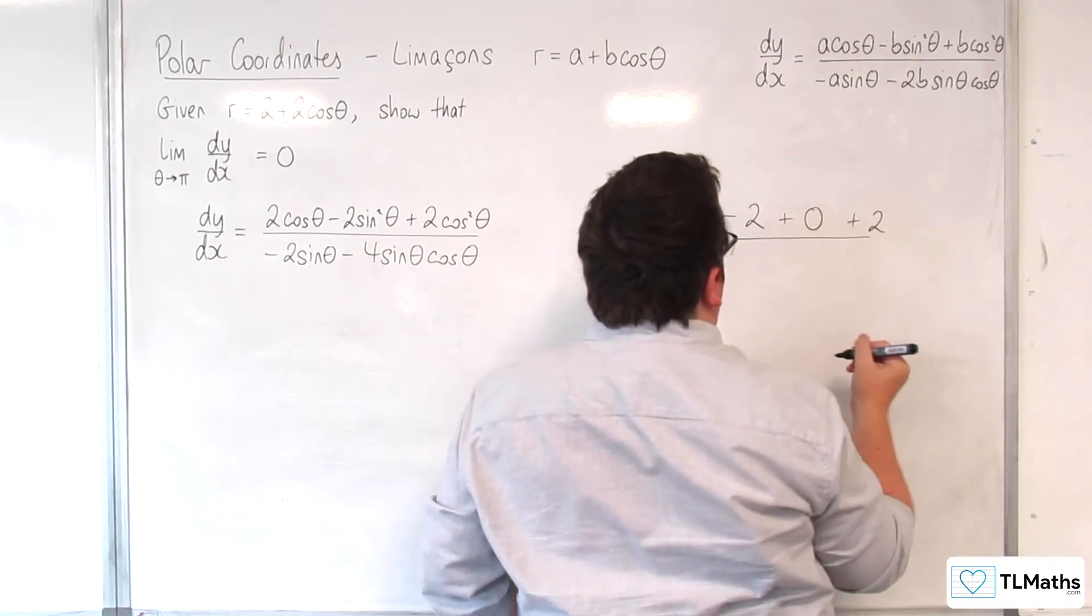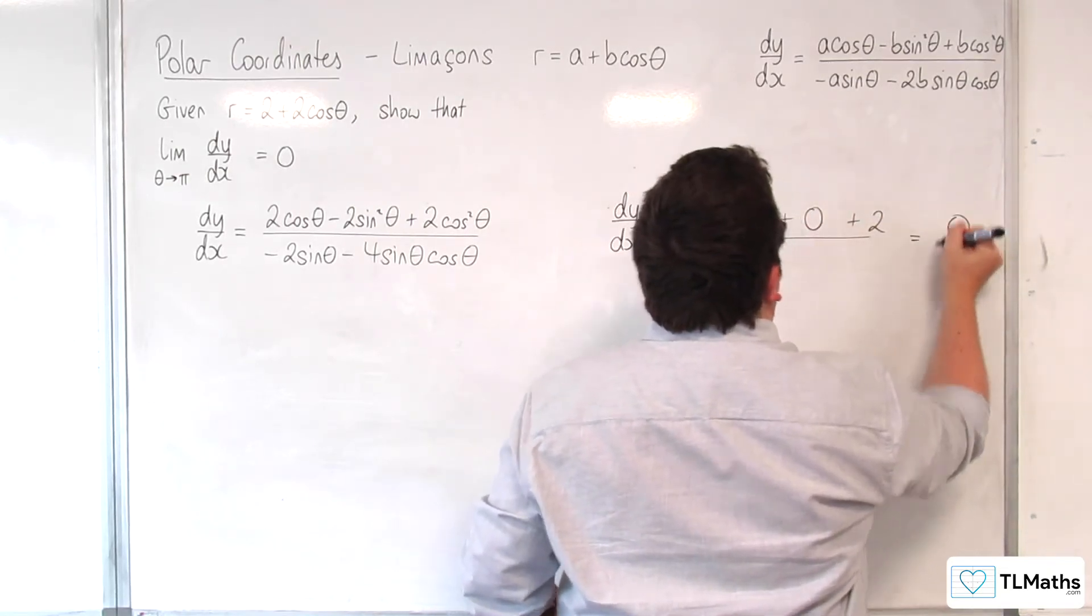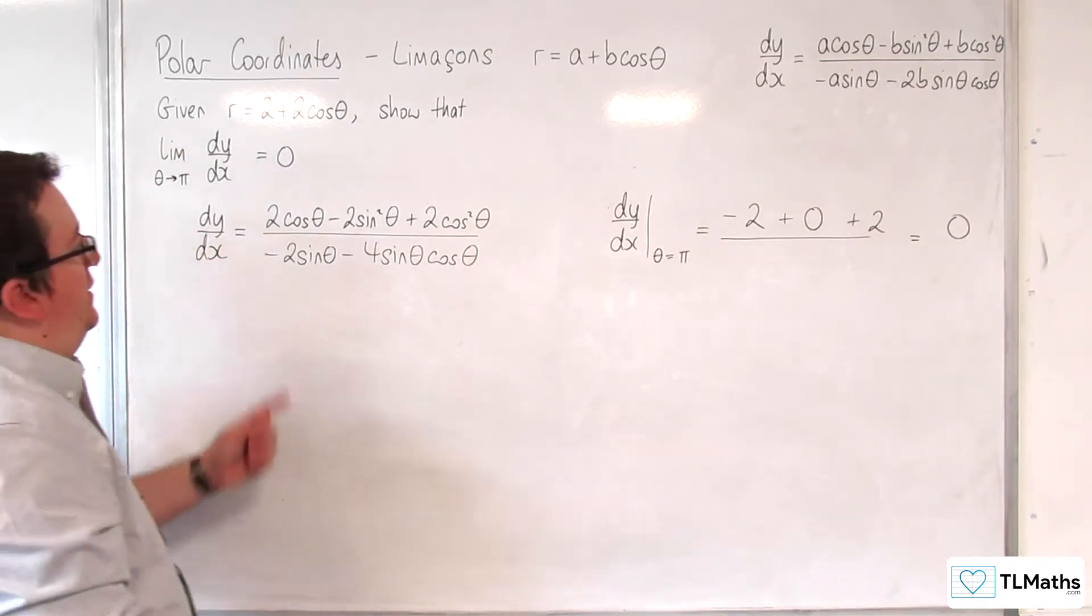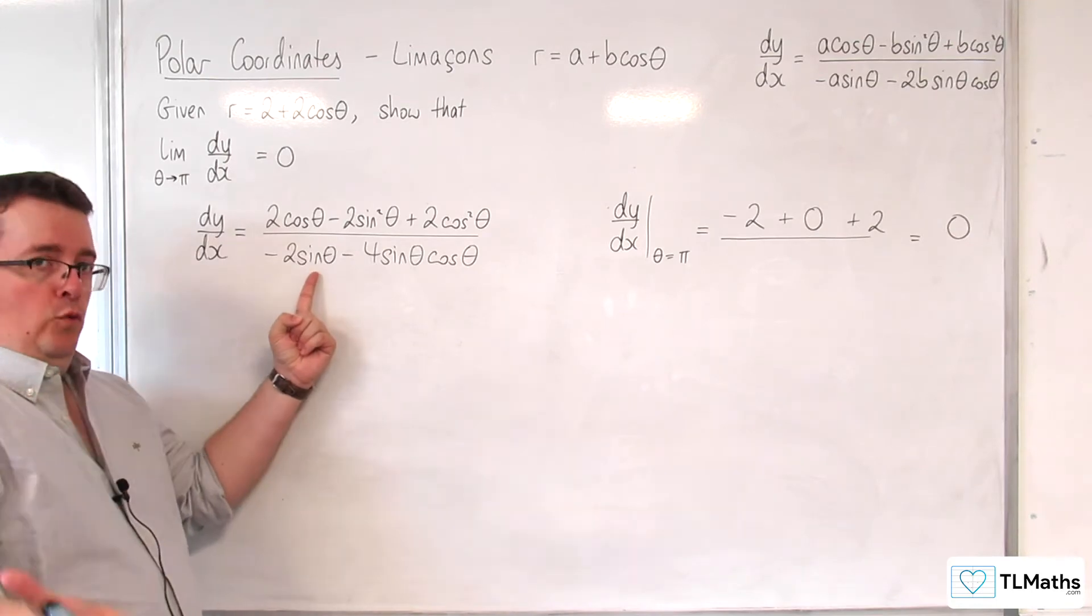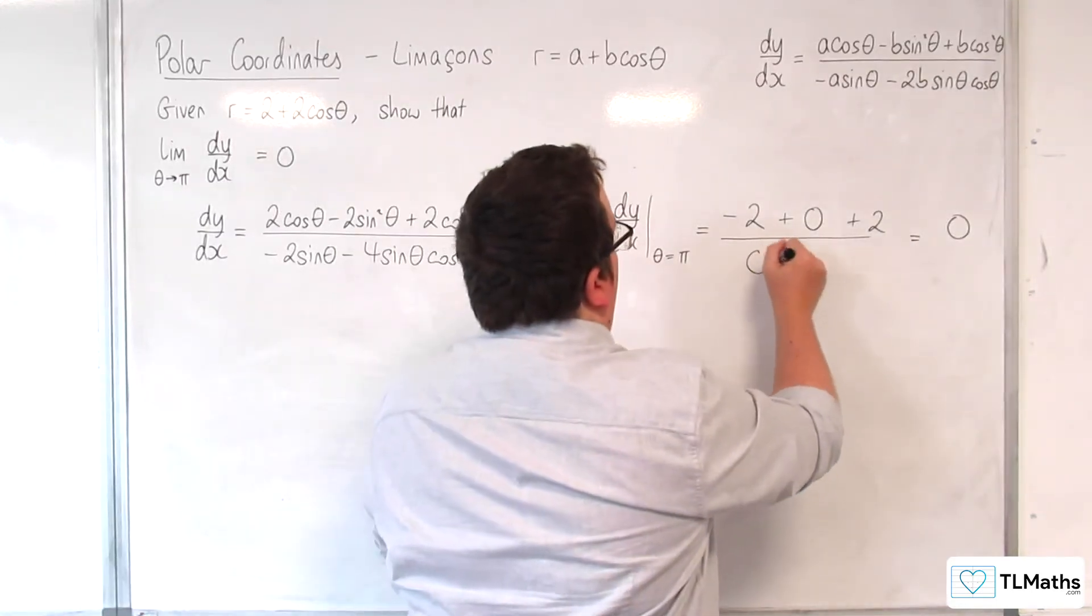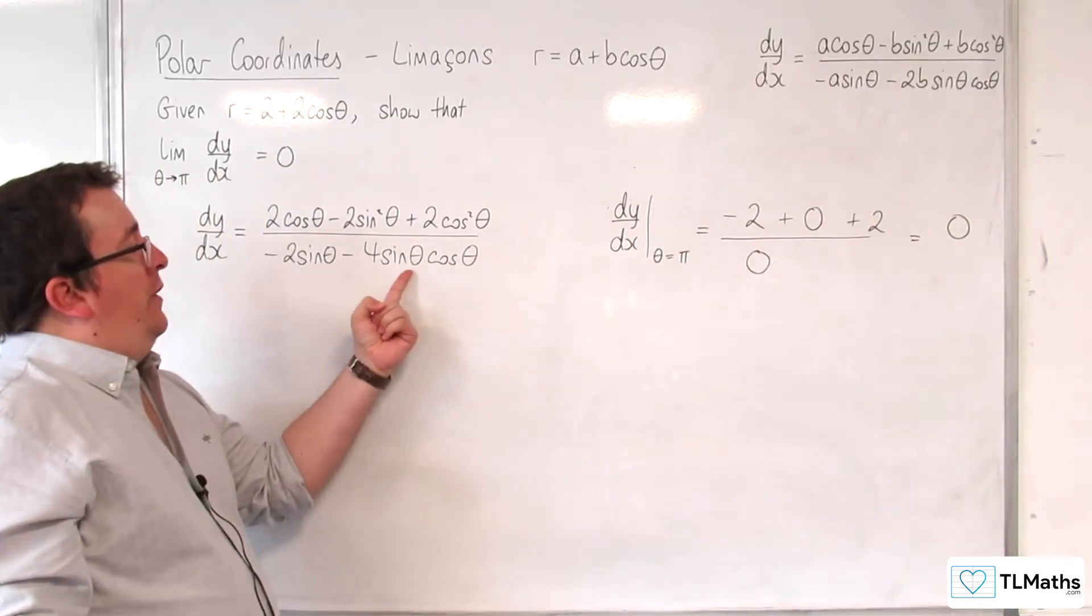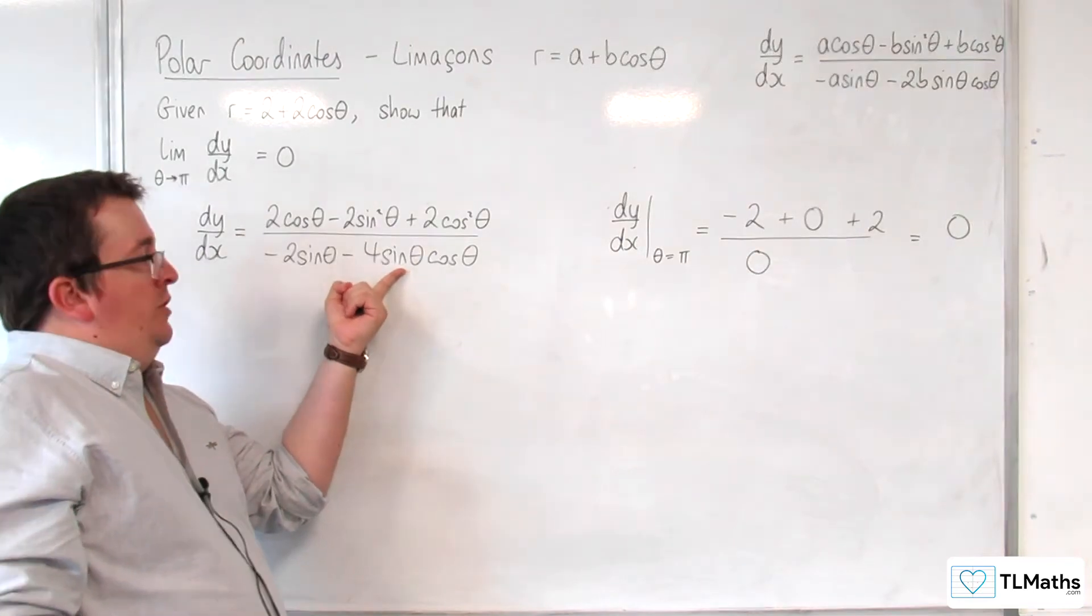So in the numerator, we've currently got 0. And in the denominator, we've got sine of pi, which is 0, and we've got sine of pi again, which is 0.